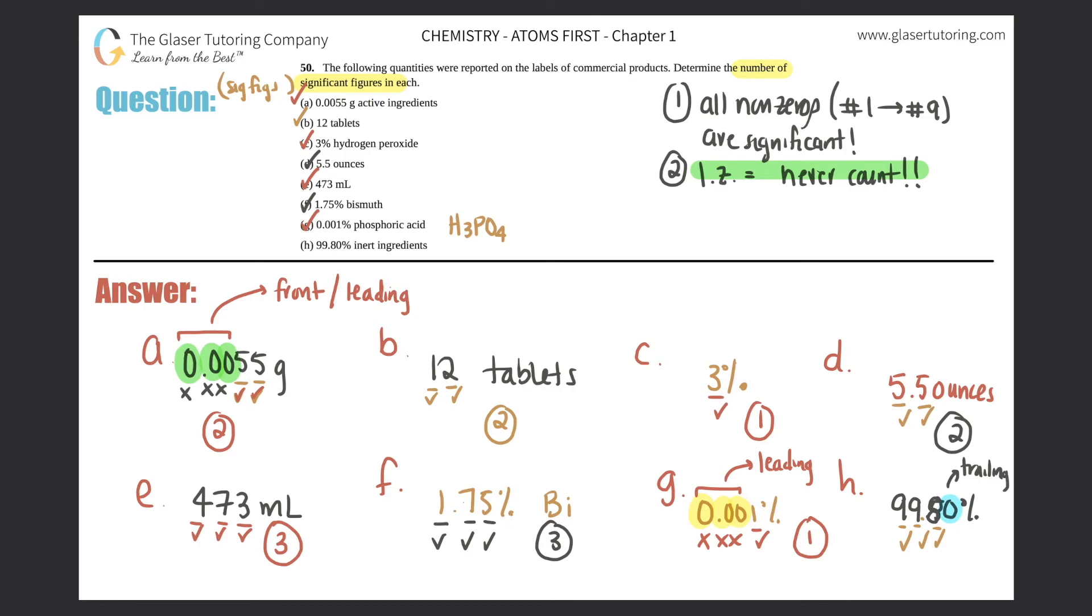The back zeros are called trailing zeros. These trail behind. Trailing zeros only count if there is a decimal. If you do not see a decimal, they do not count. Was there a decimal in this question? Yes, it was 99.80, so this zero checks out. How many sig figs? One, two, three, and four. So four sig figs.